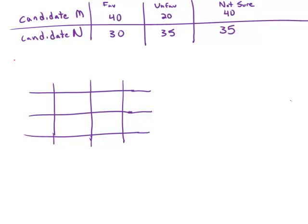So statement number one tells us that the voters who did not respond favorable to either was 40.